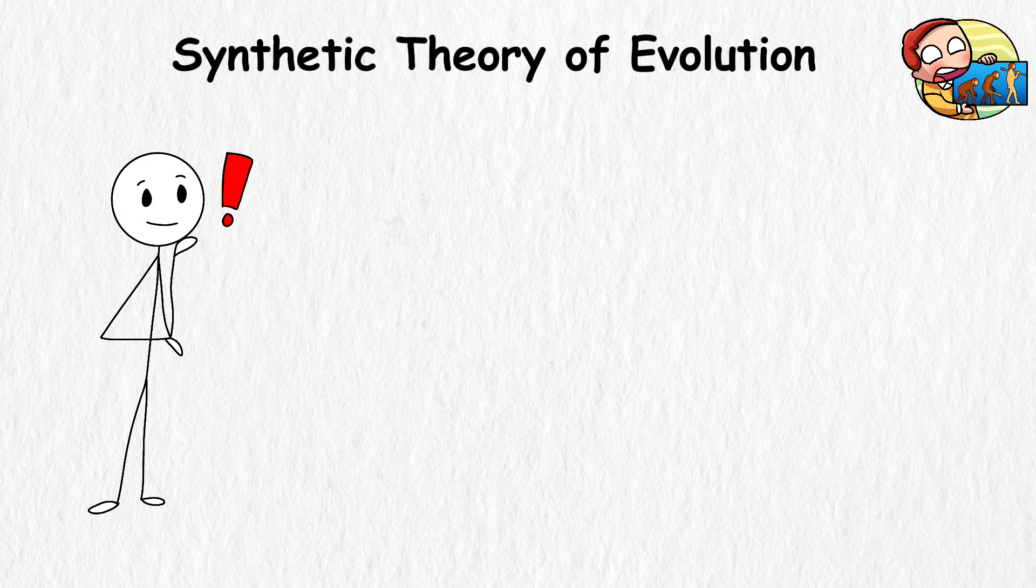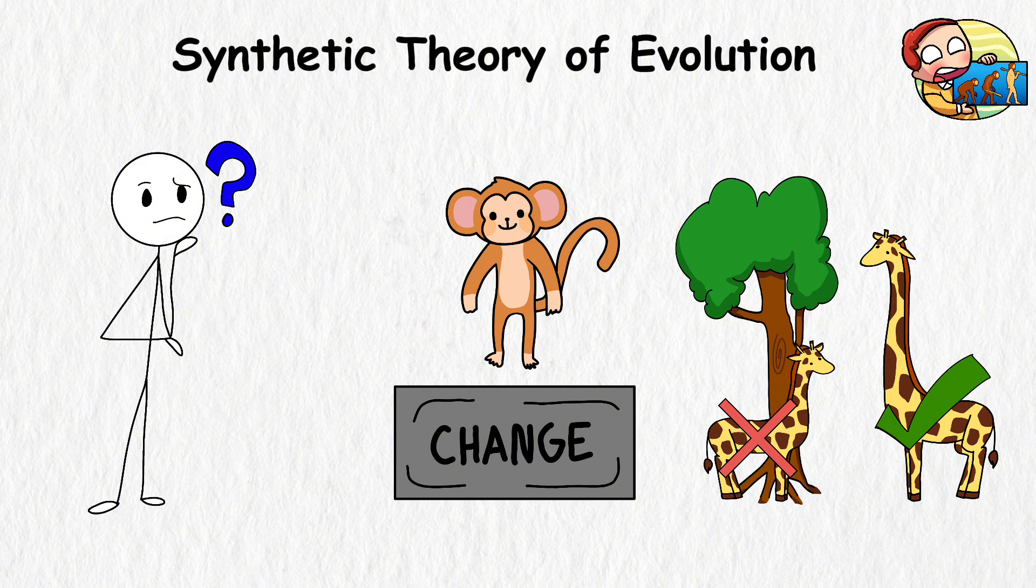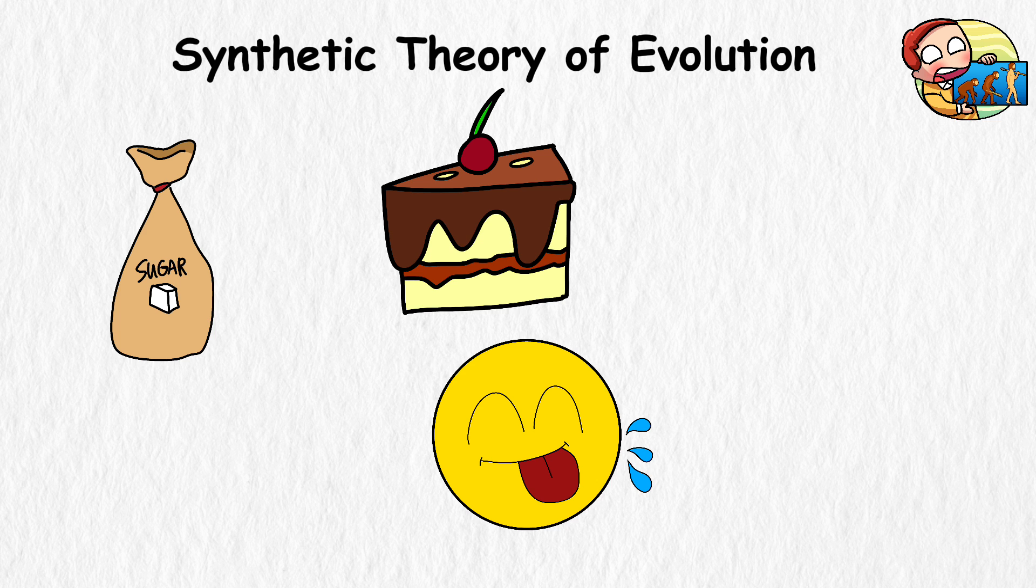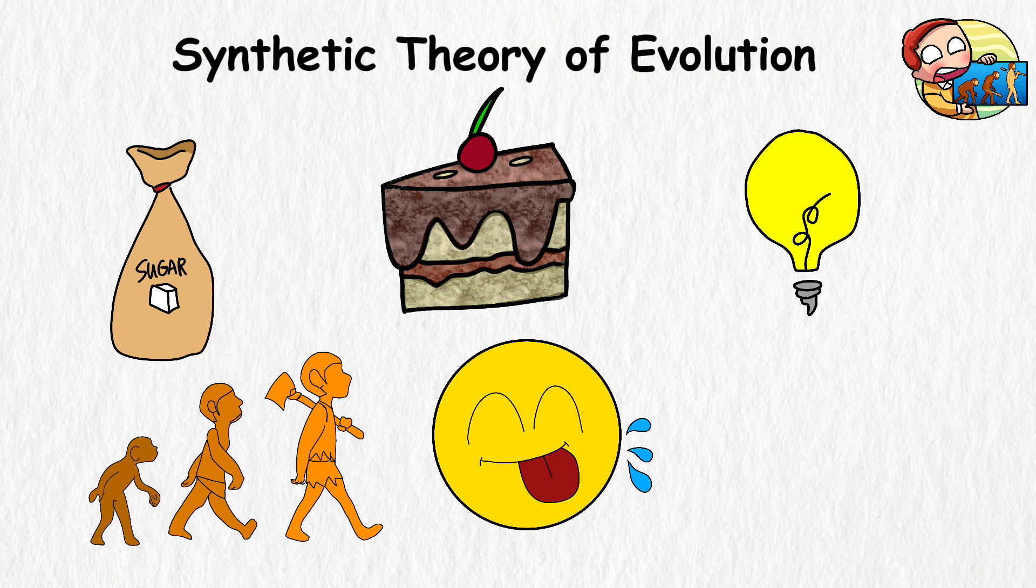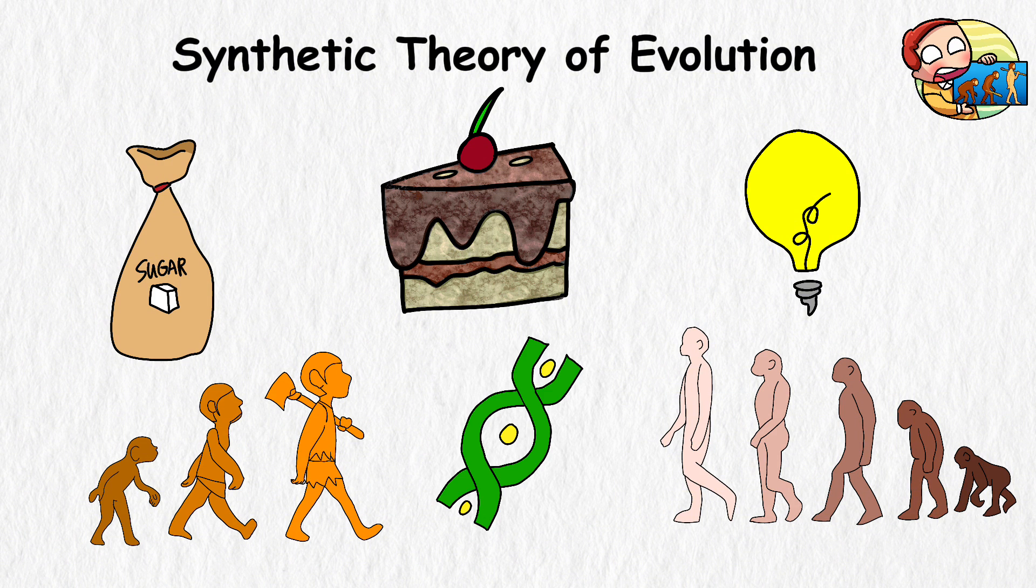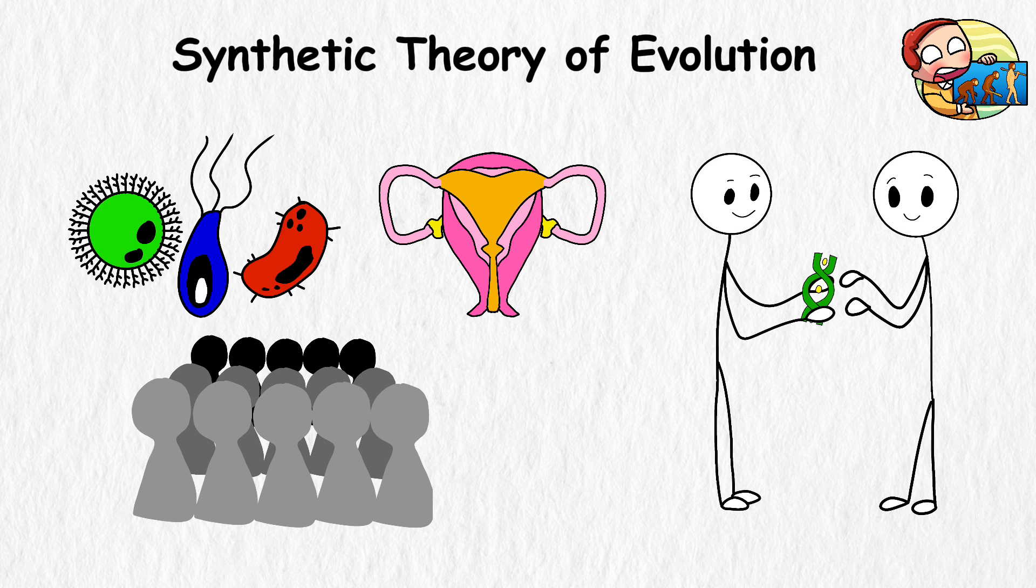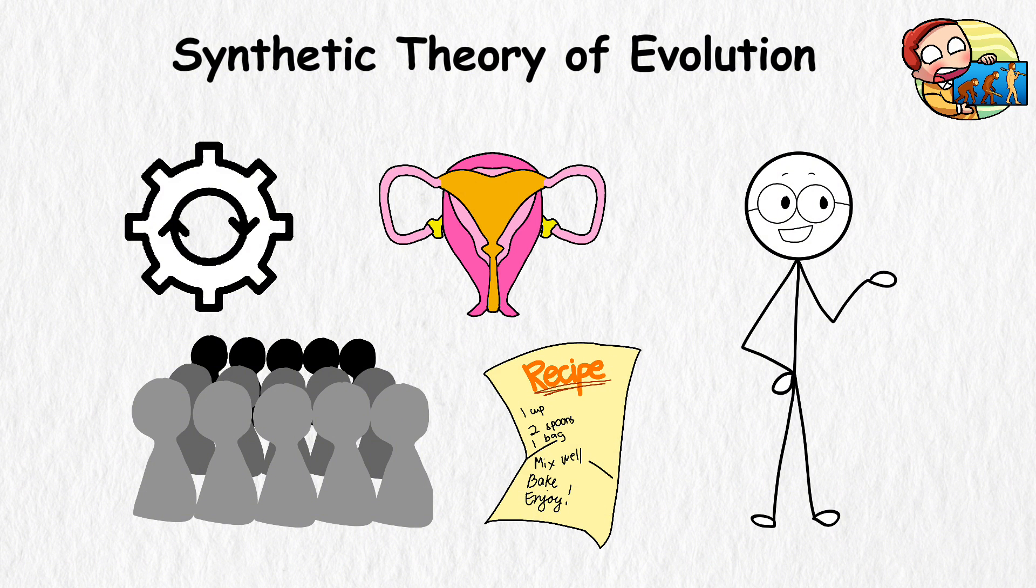Before this theory, people knew that living things changed over time and that natural selection was a part of it, but they didn't know how genes worked in that process. It was like knowing you need sugar to make a cake taste good, but not knowing how the sugar changes the cake's texture. This theory brings these ideas together. It tells us that evolution happens through genetic changes and how they're passed on through reproduction. It also considers how populations evolve, not just individual organisms. So it's like saying not only does the cake recipe change, but so does the entire cake baking process over time.